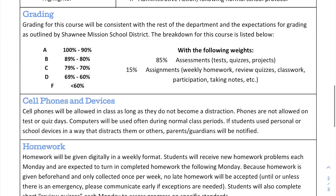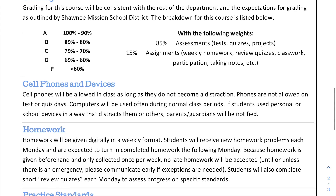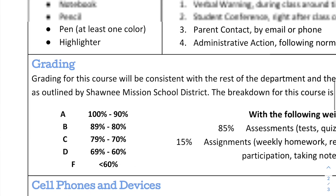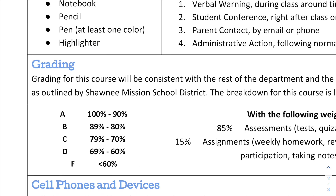For grading, as far as letter grades in this class, it is going to be what you would expect. An A is 90 to 100 percent. A B would be 80 to 89 percent. A C would be 70 to 79. A D is 60 to 69. And an F would be anything below that. I do round, so if you had an 89.5, that would go ahead and round up. 79.5 would round up, and so on.